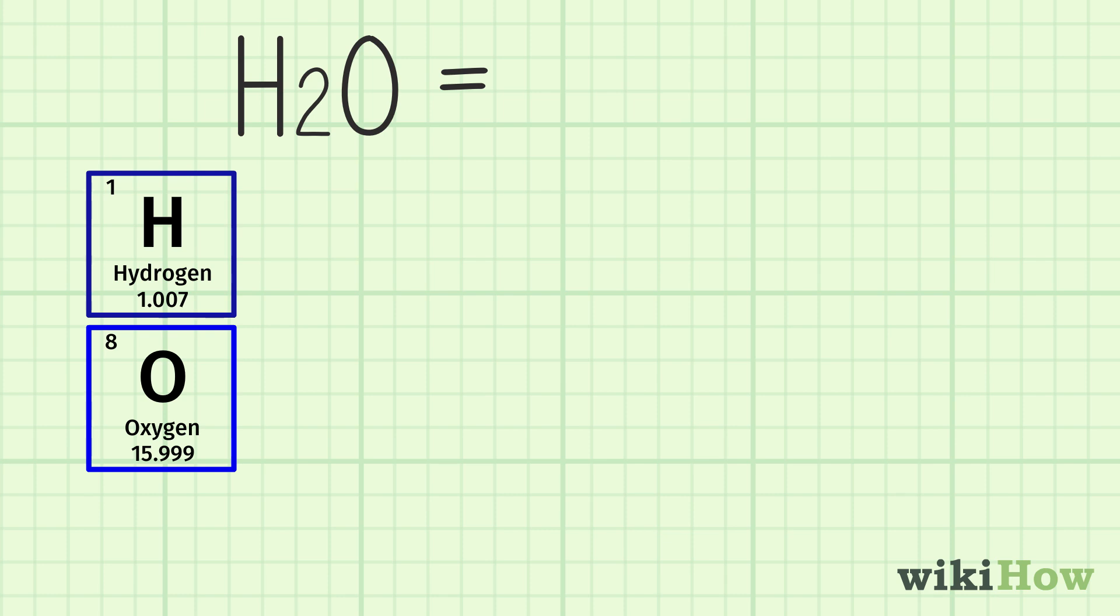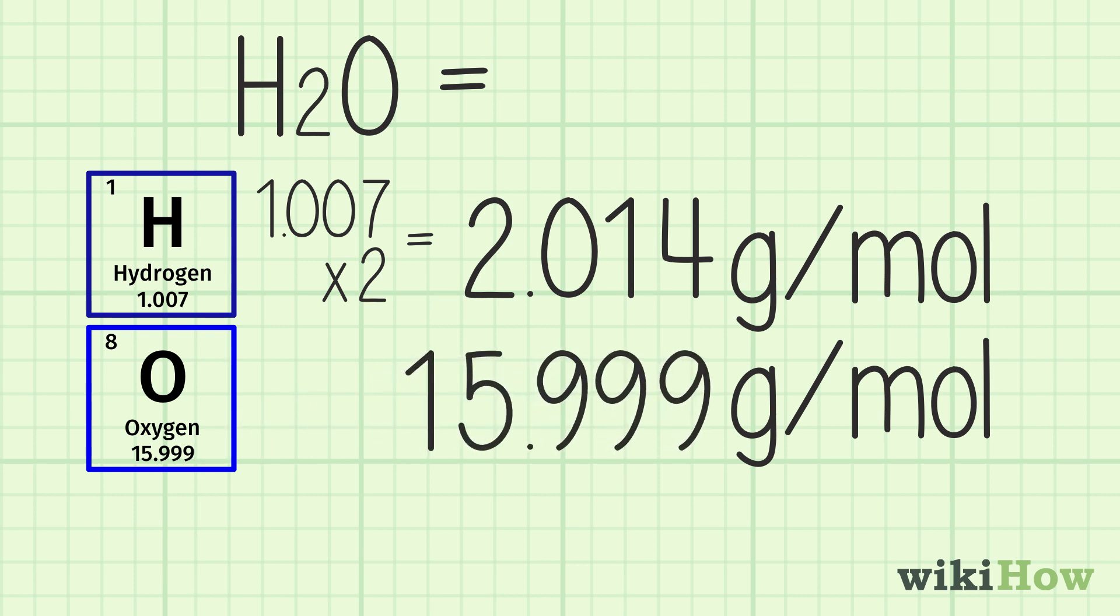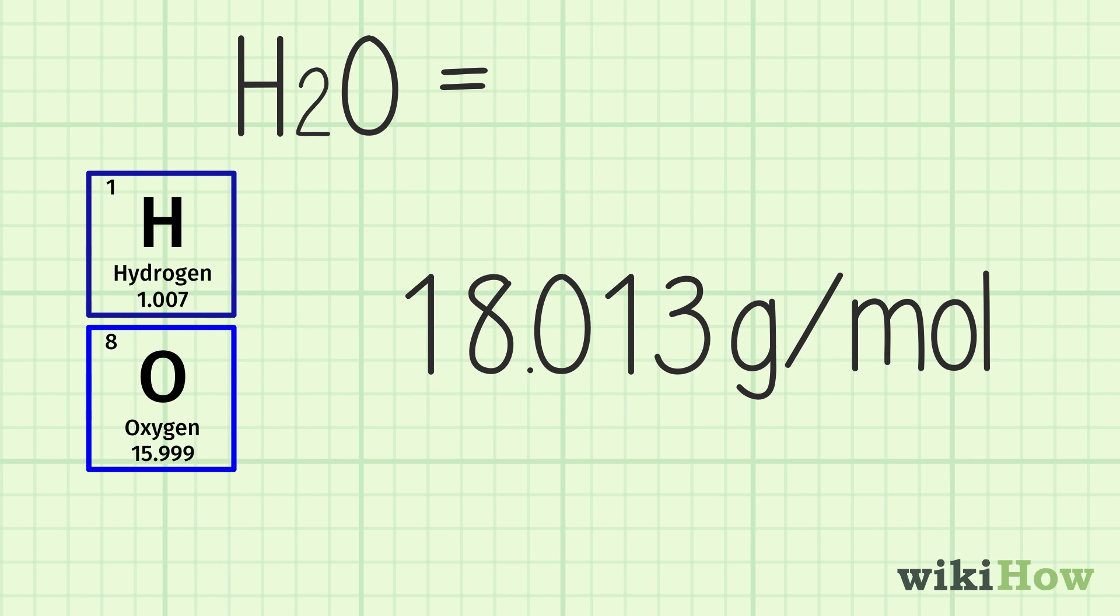In this case, the molar mass of the two hydrogen atoms is 2.014 grams per mole, while the single oxygen atom is 15.999 grams per mole. Add them together to get the total molar mass of 18.013 grams per mole.